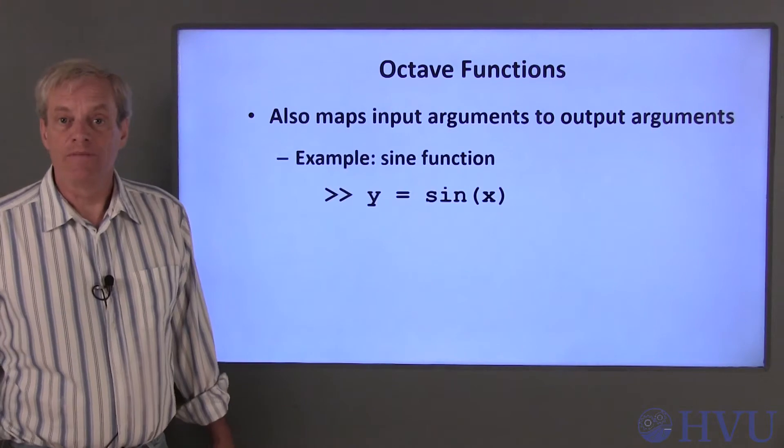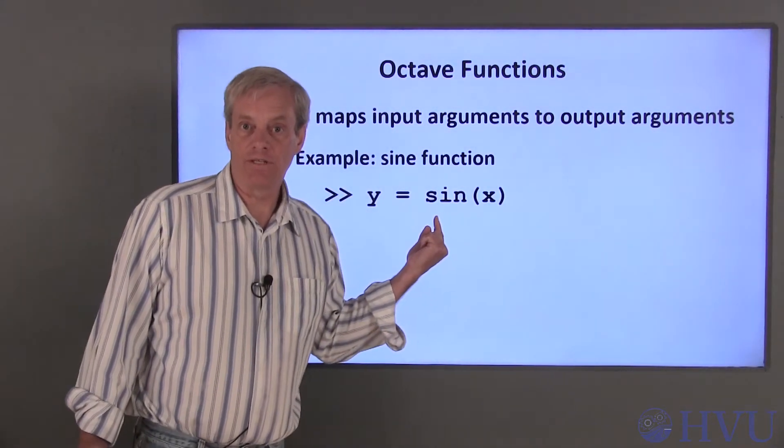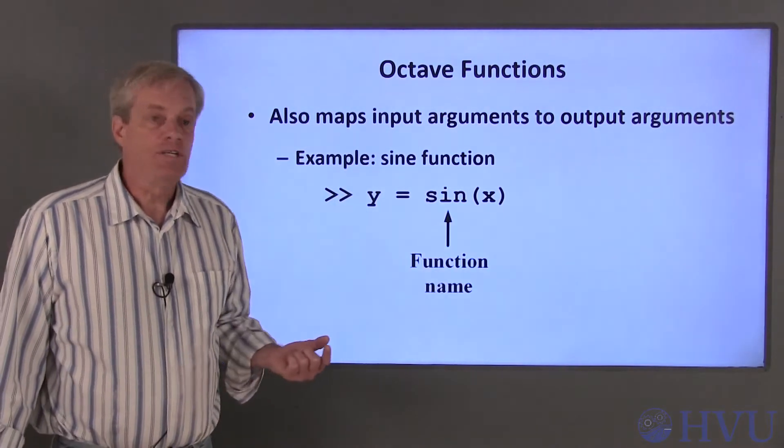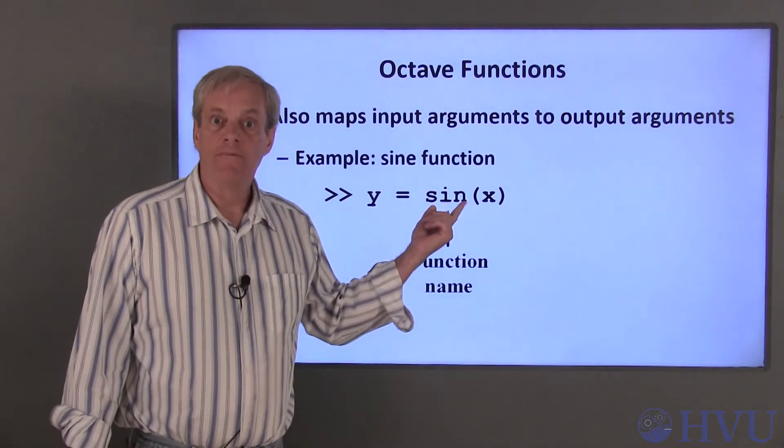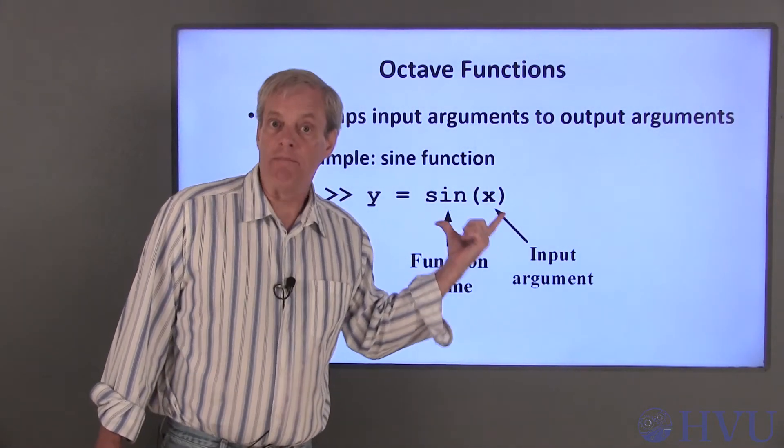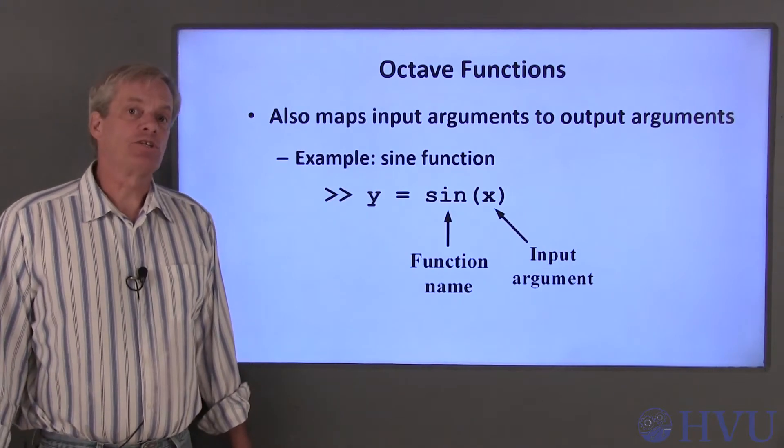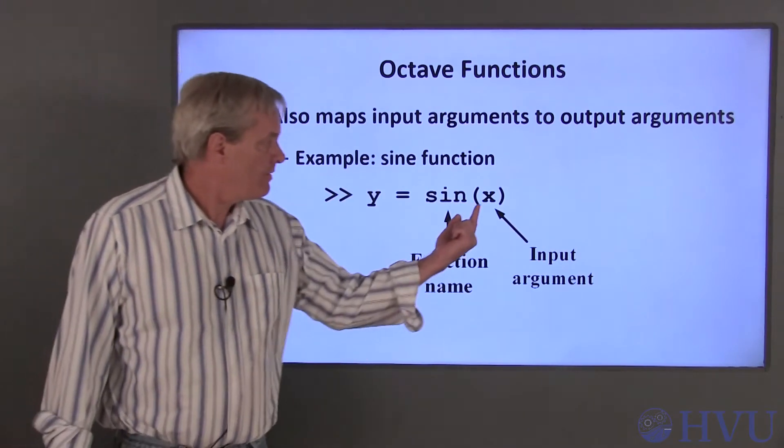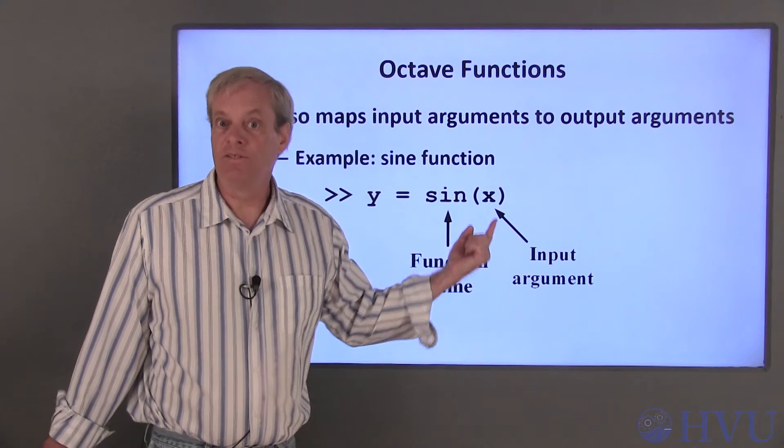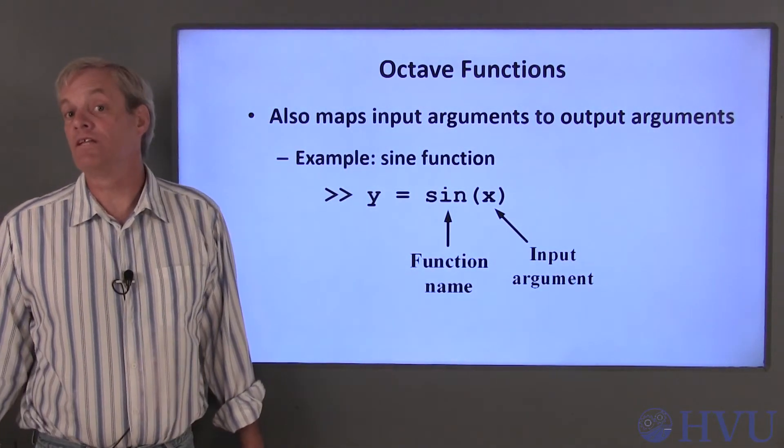For example, the sine of a number can be calculated using Octave's sin function. The function name is sin. The input argument is listed in parentheses after the function name, exactly as with our mathematical functions. The main difference so far is that the input argument, the variable x in this example, needs to be defined as a number before our Octave function can use it.